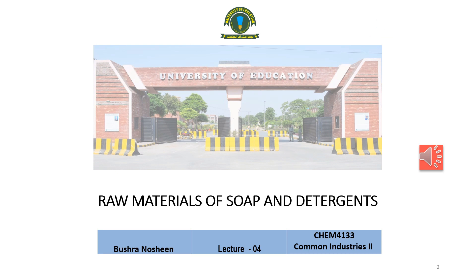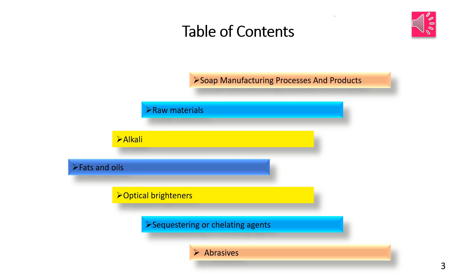Welcome to Lecture Four on Raw Materials of Soaps and Detergents. The table of contents of this lecture covers soap manufacturing processes and products, raw materials including alkali, fats and oils, optical brighteners, sequestering or chelating agents, and abrasives.